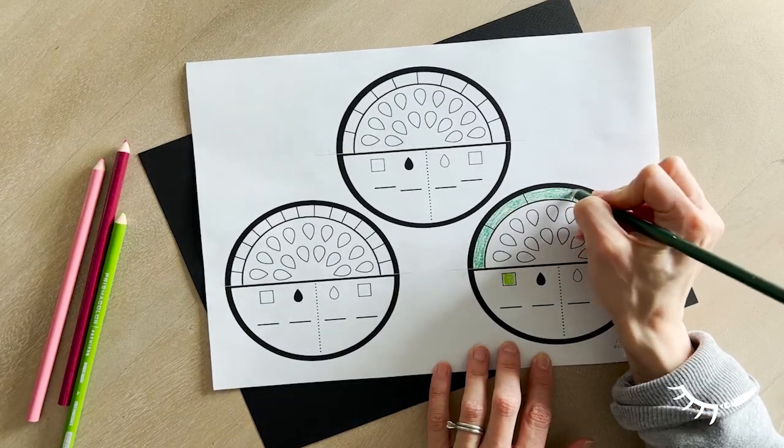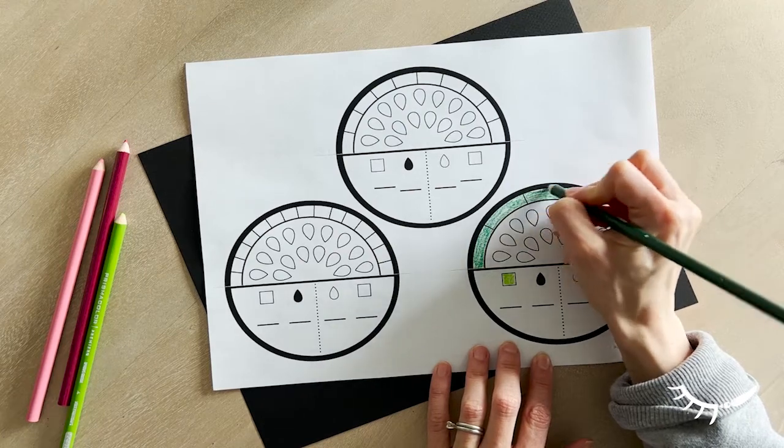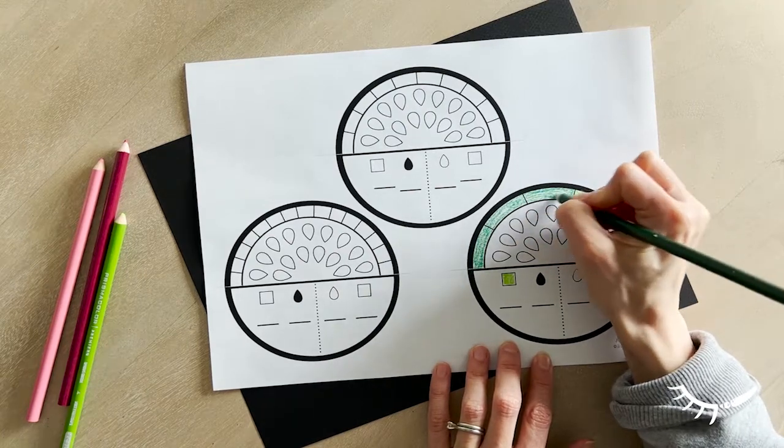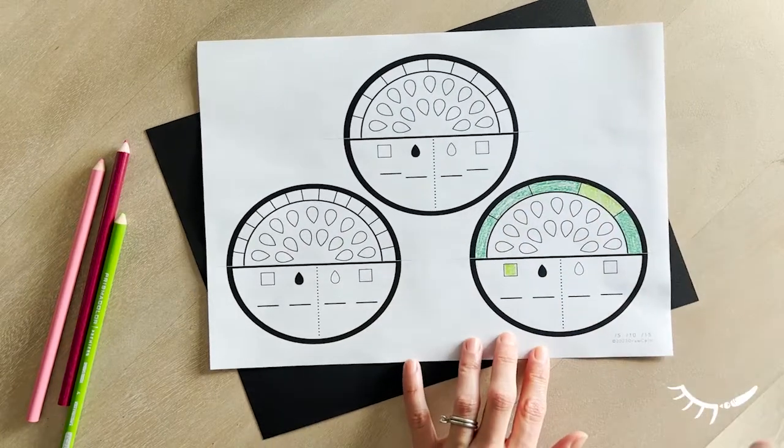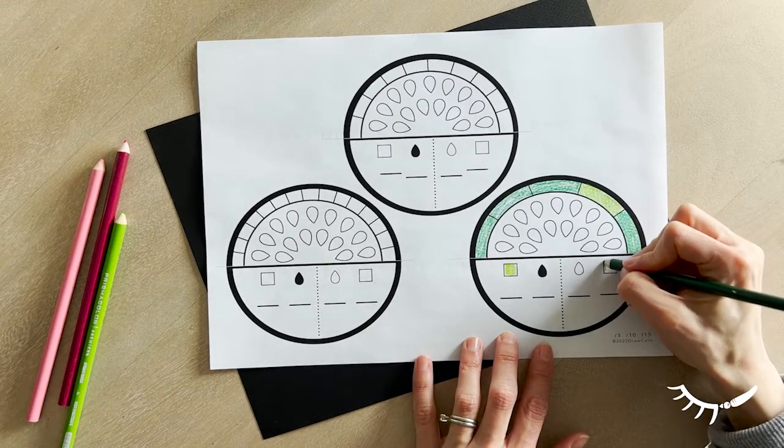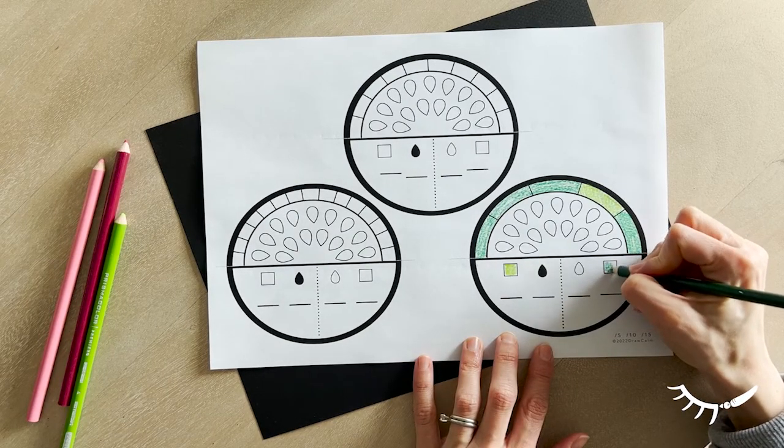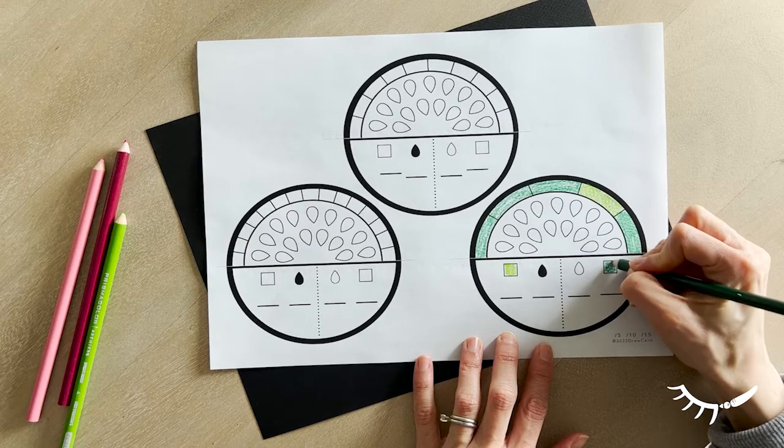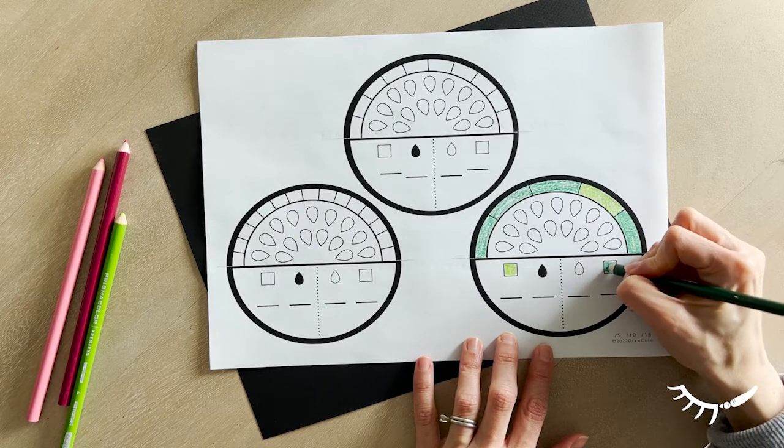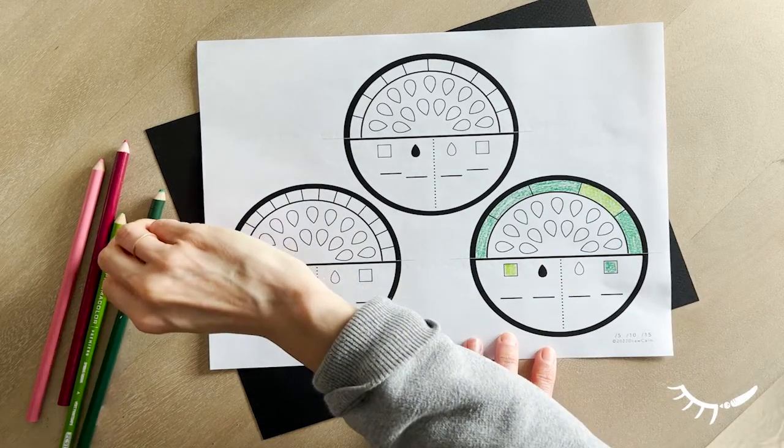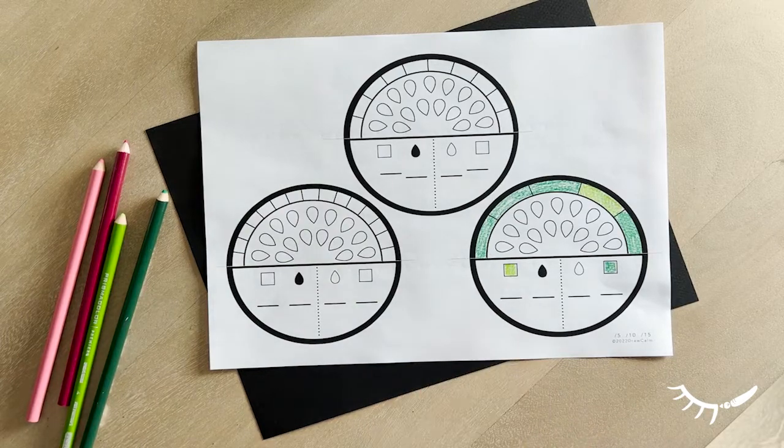For the blank seed option, each slice has the same number of seeds as the slice with the greatest number of segments. For this example in the video, each rind is split up into 5, 10, or 15 segments. Each watermelon slice has 15 seeds. This was designed so that seeds could easily be an equivalent fraction to what is represented on the rind.